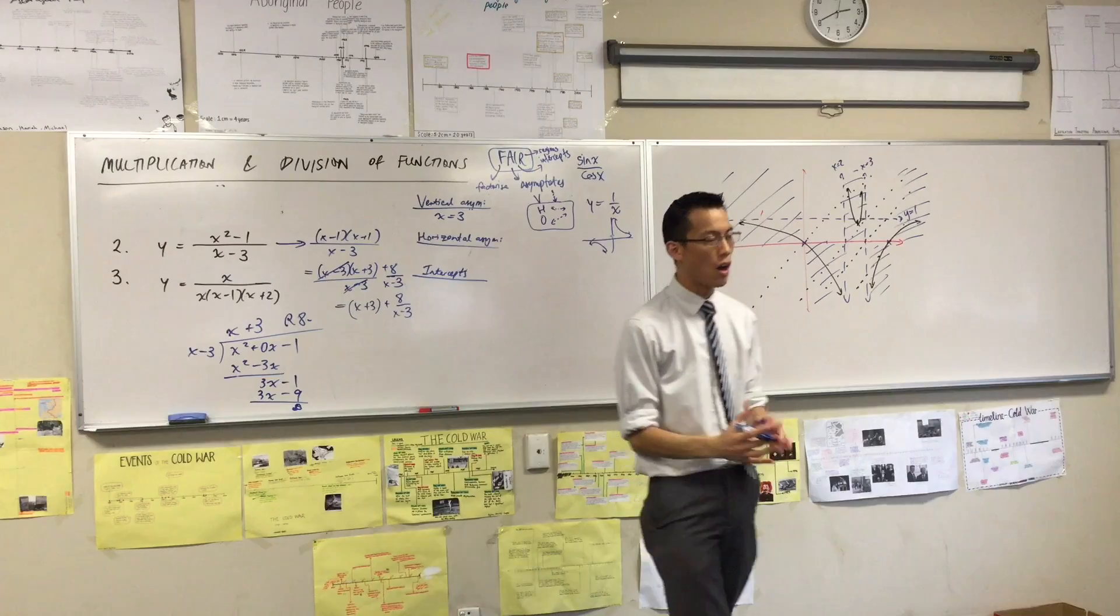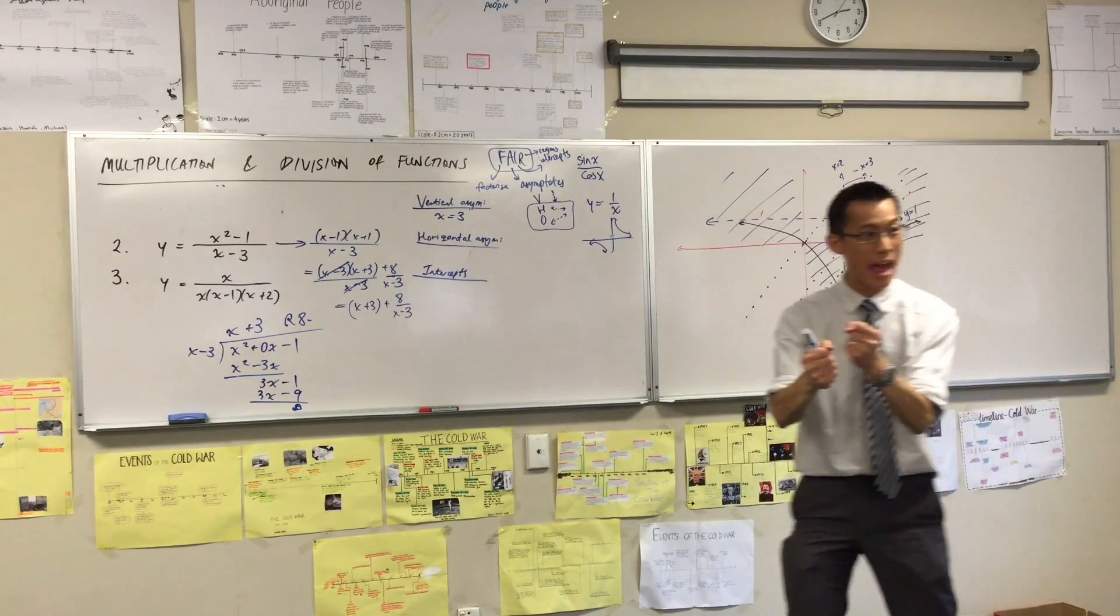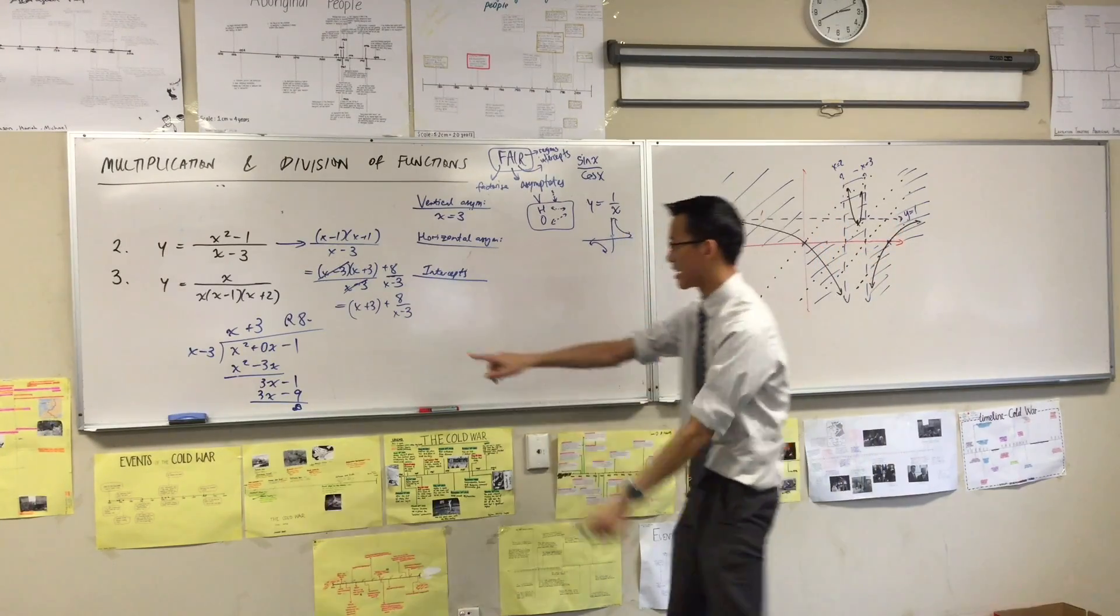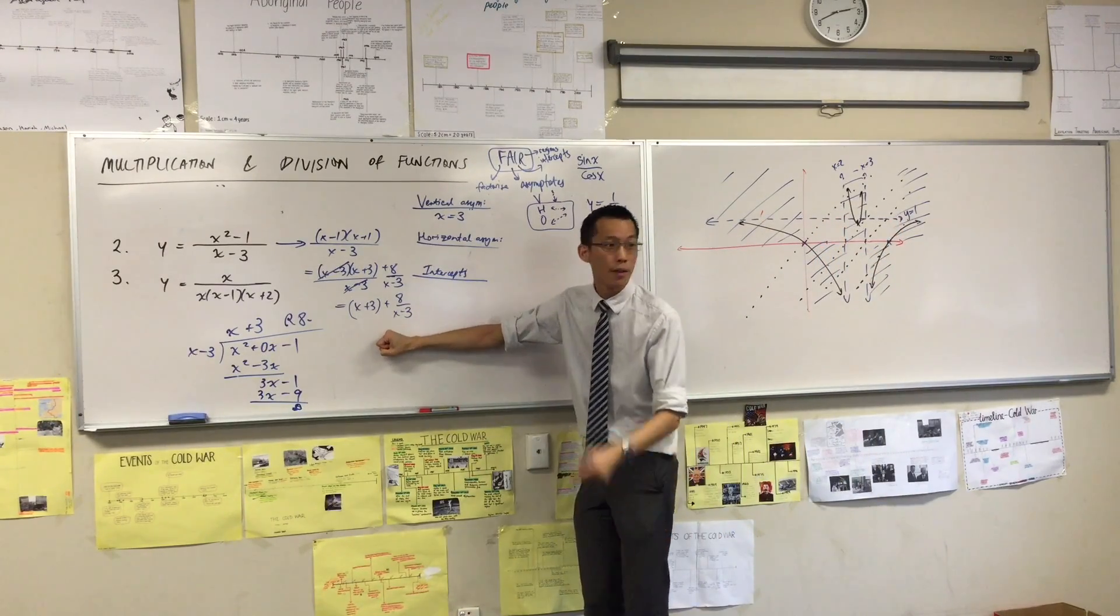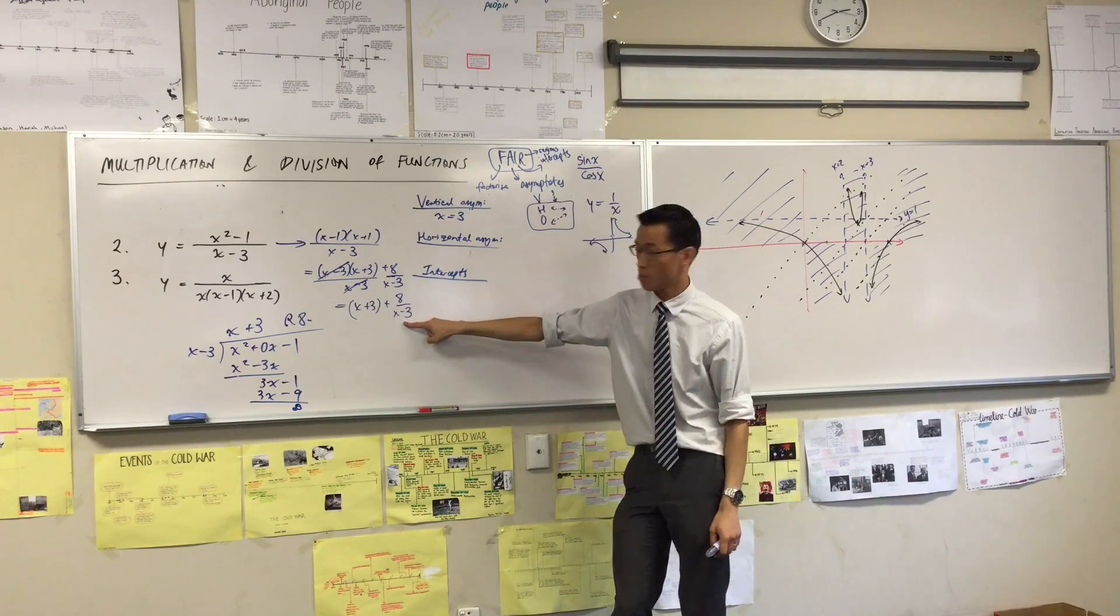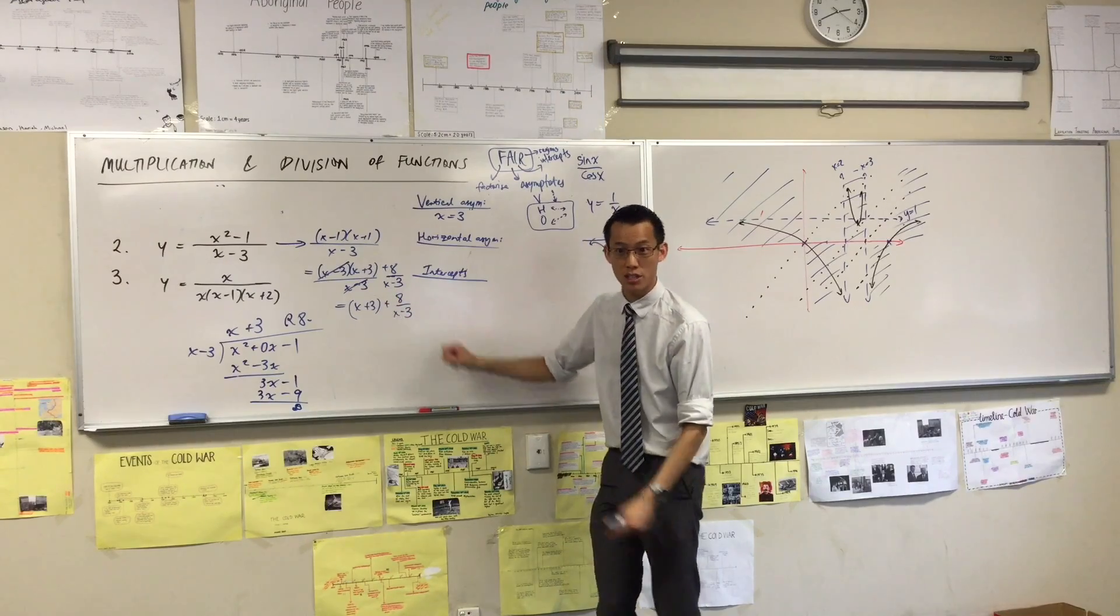Now remember horizontal or oblique asymptotes are all about what happens to x when it gets really really big positive or really really big negative. Now tell me what is happening to this thing for those kinds of values? Just have a look at this guy. What's happening to it?